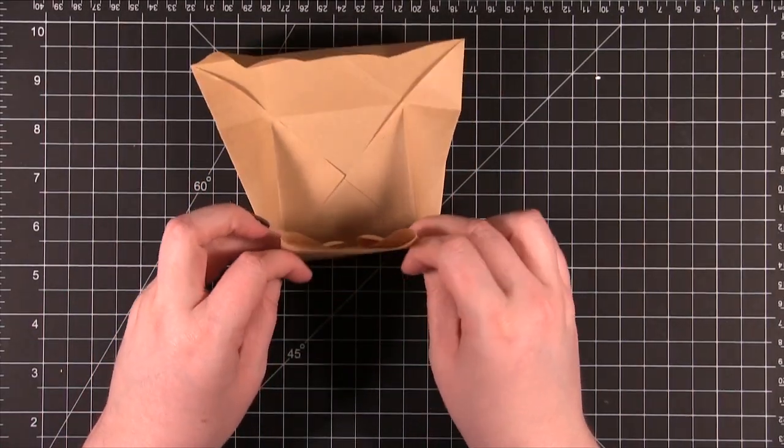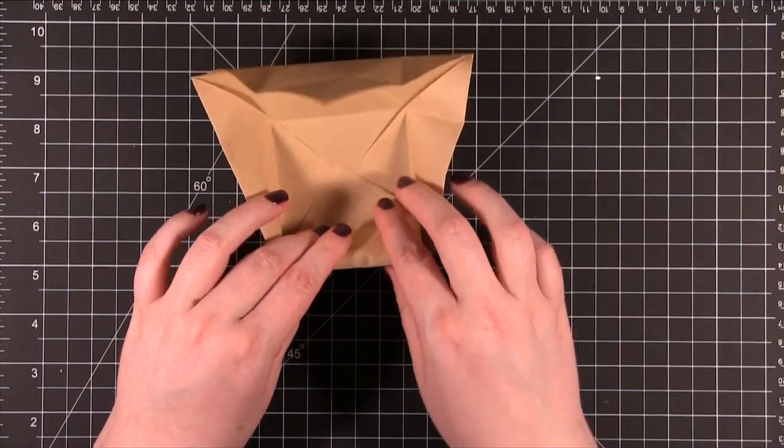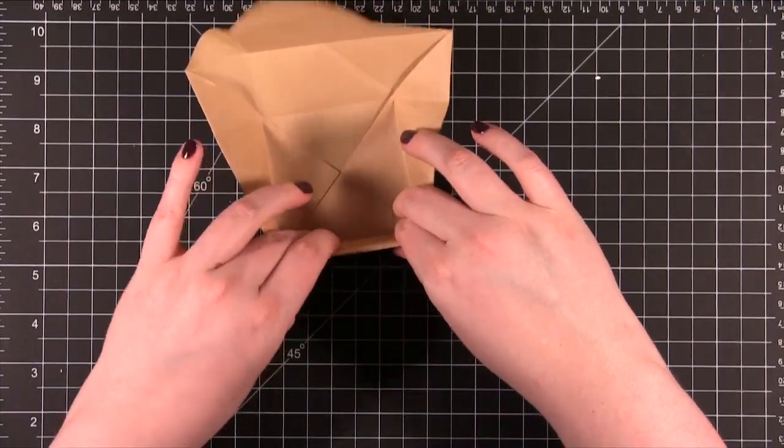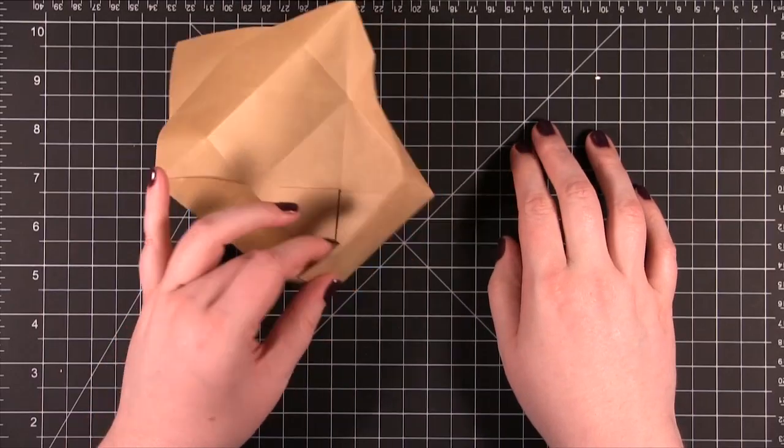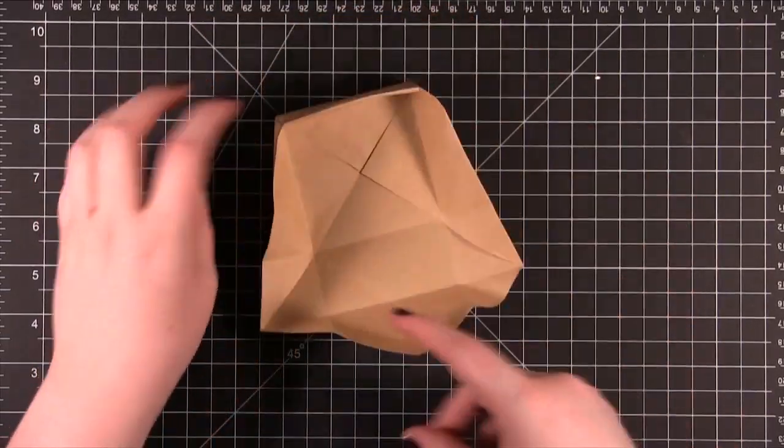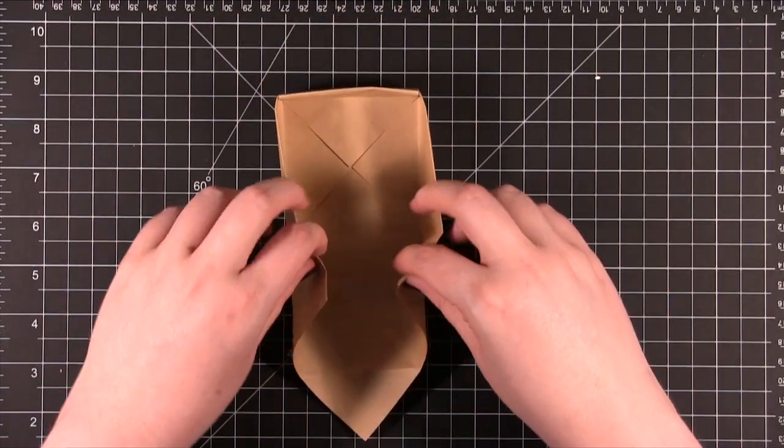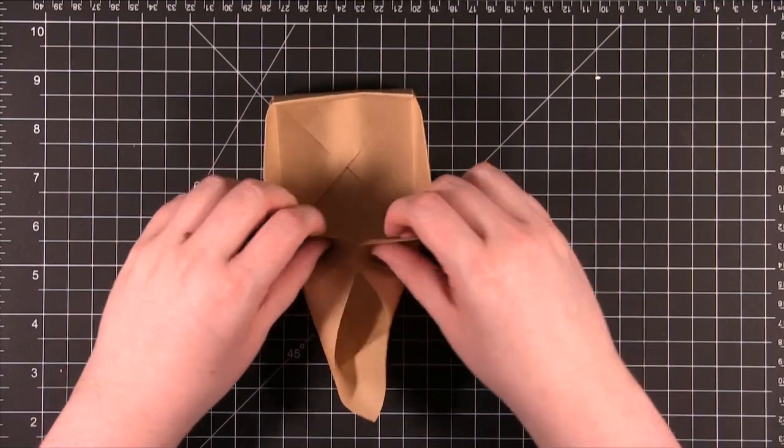Just fold those in and then this one's going to go down and that forms the first side of the box. Then I'll go to this other side and I'll do the same thing. Kind of bend those in.